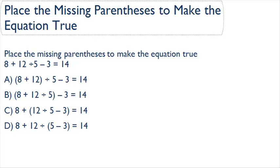Now let's talk about how to solve a problem that asks us to place the missing parentheses to make the equation true. Here the question says, place the missing parentheses to make the equation true. And the equation is 8 plus 12 divided by 5 minus 3 equals 14.